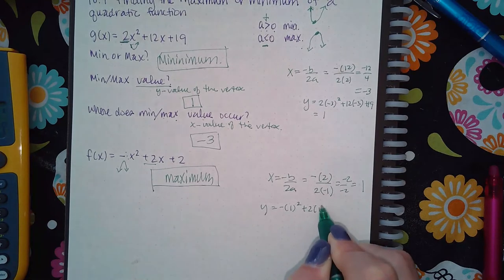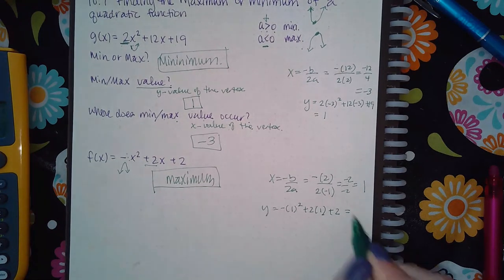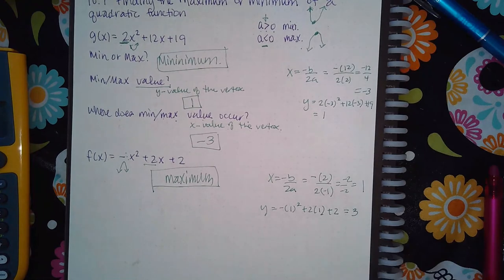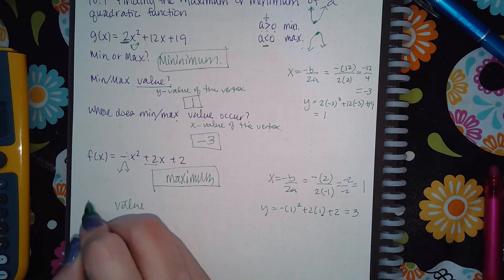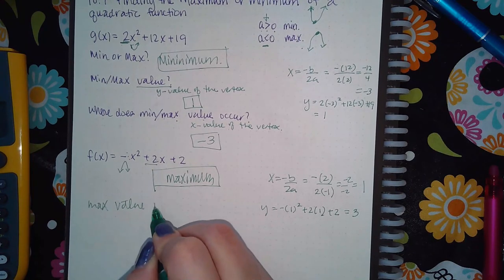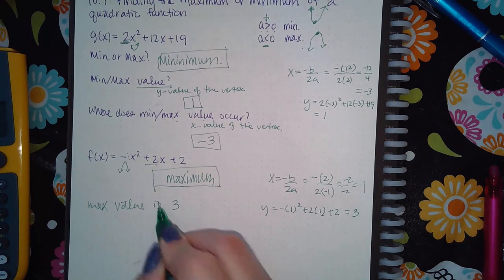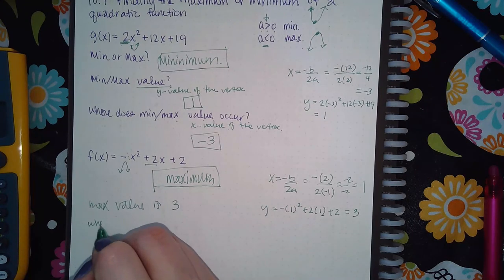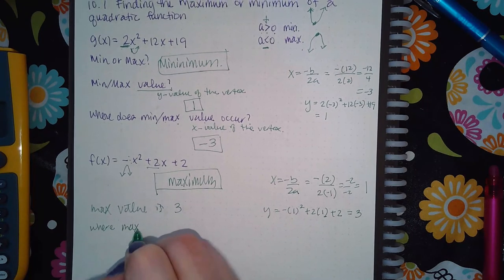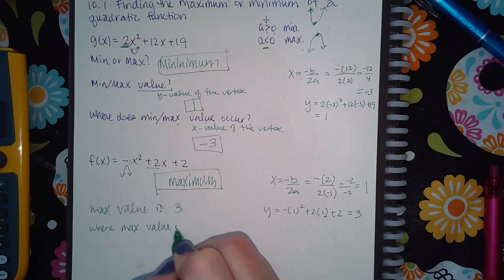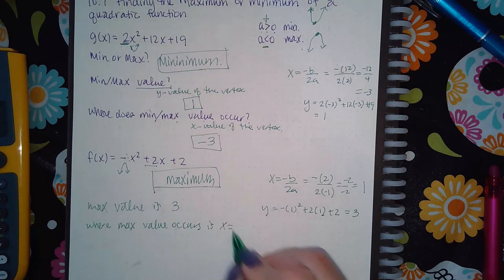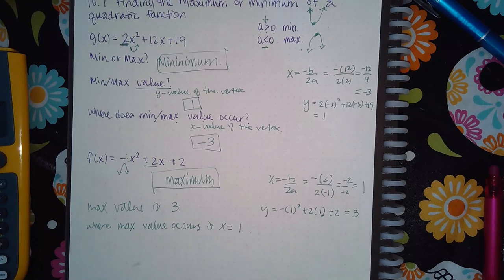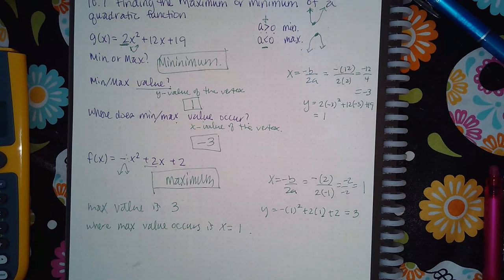So then my y value is negative 1 squared plus 2 times 1 plus 2, which you get 3. So then the value, the max value in this case, is the y value which is 3. Where the max value occurs is at x equal to 1. Make sure you're paying very special attention to that wording.